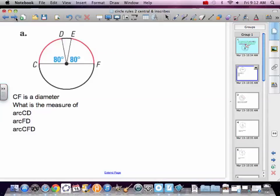So let's apply that a little bit. CF is a diameter. This means CD is going to be 80 degrees because central angle is 80 and EF is going to be 80 degrees. So arc CD 80 degrees.